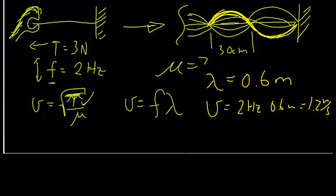And then you can just solve for mu. Mu is just going to be t over v square, 3 newtons, which becomes kilogram meters per second squared, then divided by meter squared, second squared.